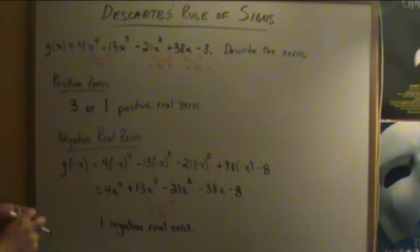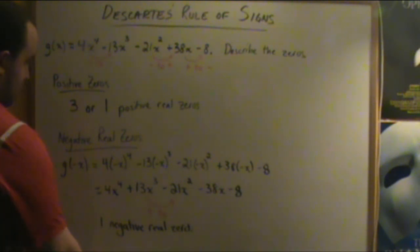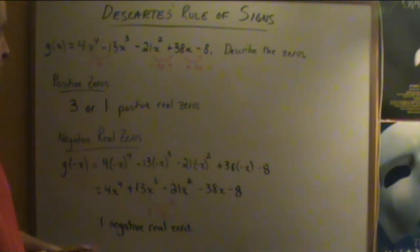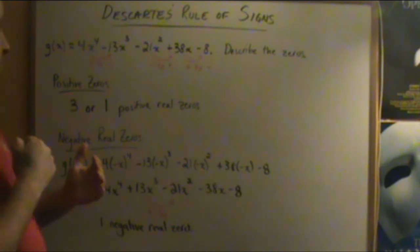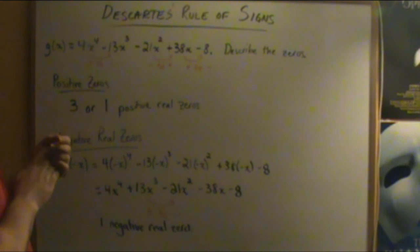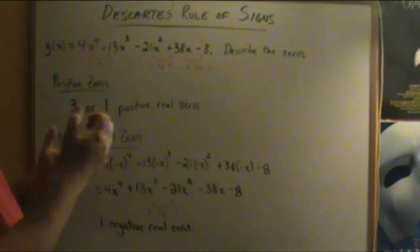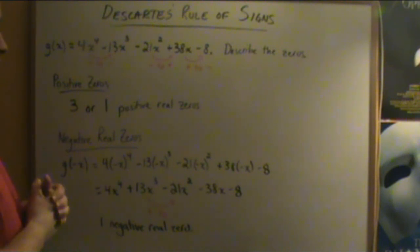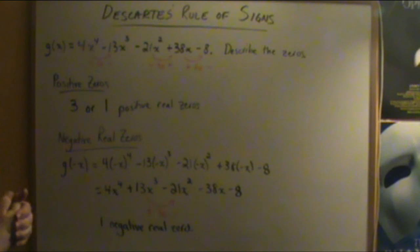We could use the rational zeros theorem to find these zeros, but that's the general idea of Descartes' Rule of Signs. It was named after mathematician René Descartes, the founder of the Cartesian coordinate plane — the graph we use to plot all of our functions: linear, quadratic, polynomial, and so forth. So that's Descartes' Rule of Signs.